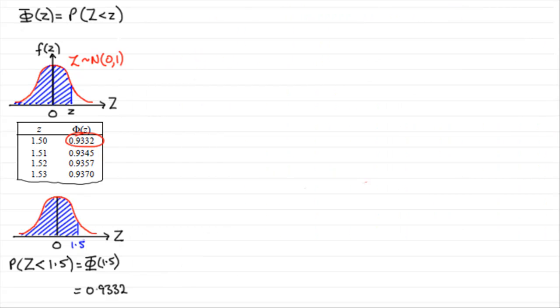Now suppose we had to work out the probability of z being more than one and a half standard deviations from the mean. Well to do this, our tables only give us area to the left. So to get around this problem, what we do is we look at the area under the whole graph, which would be 1,